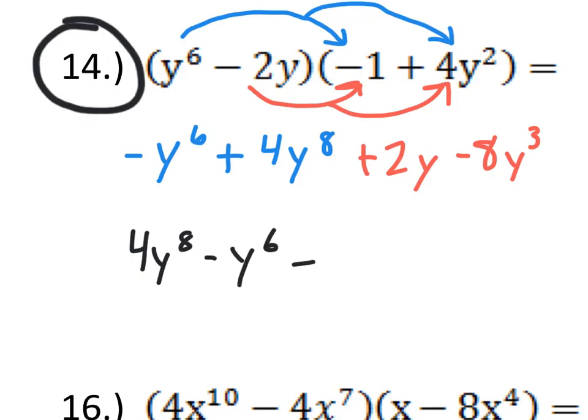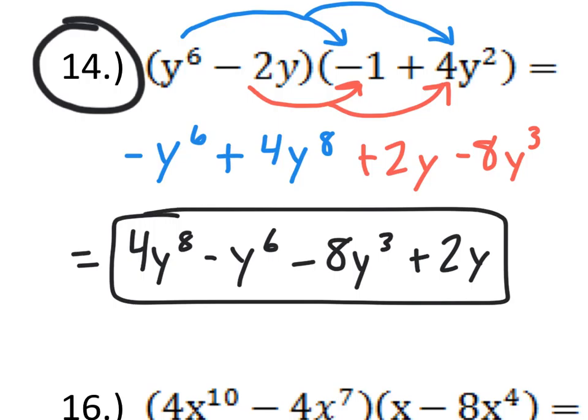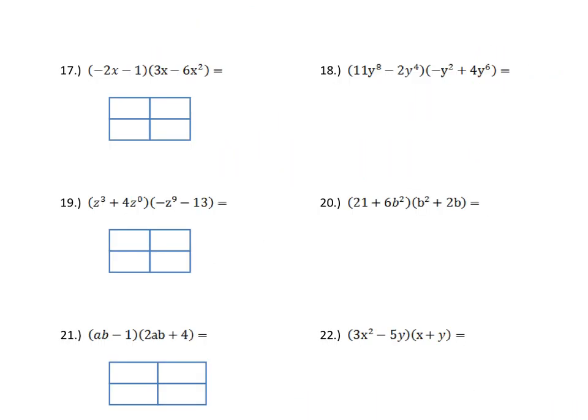Now, this is a good answer, but we could put it in order of exponents. So, y to the 8th is the biggest one. So, the 4y to the 8th could come first. Then minus y to the 6th. Then minus 8y to the 3rd. And plus 2y. And this would be our final answer right here.